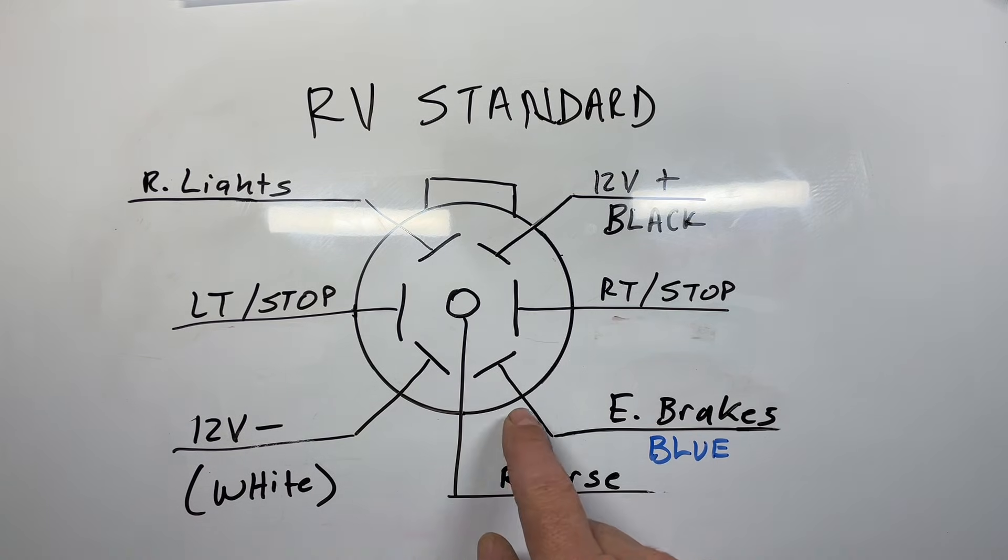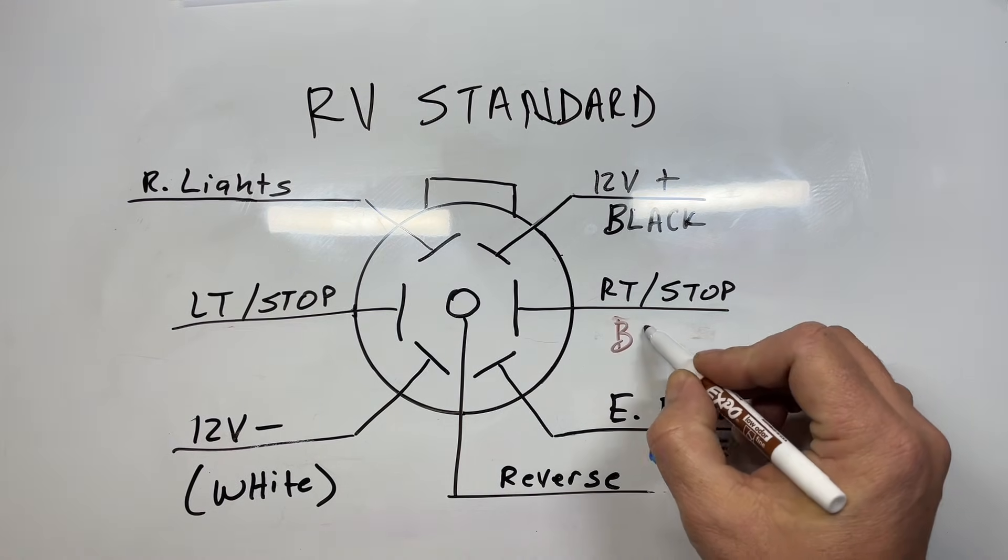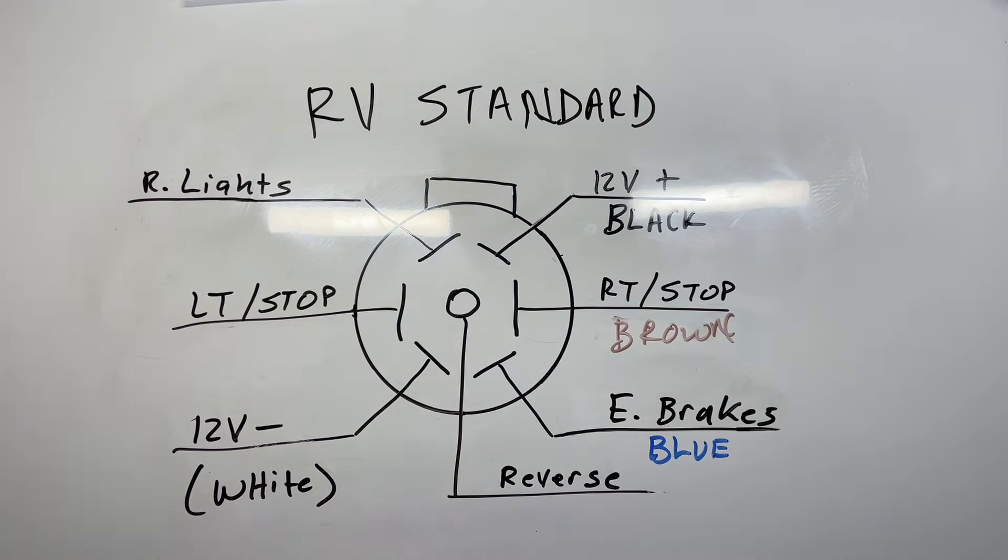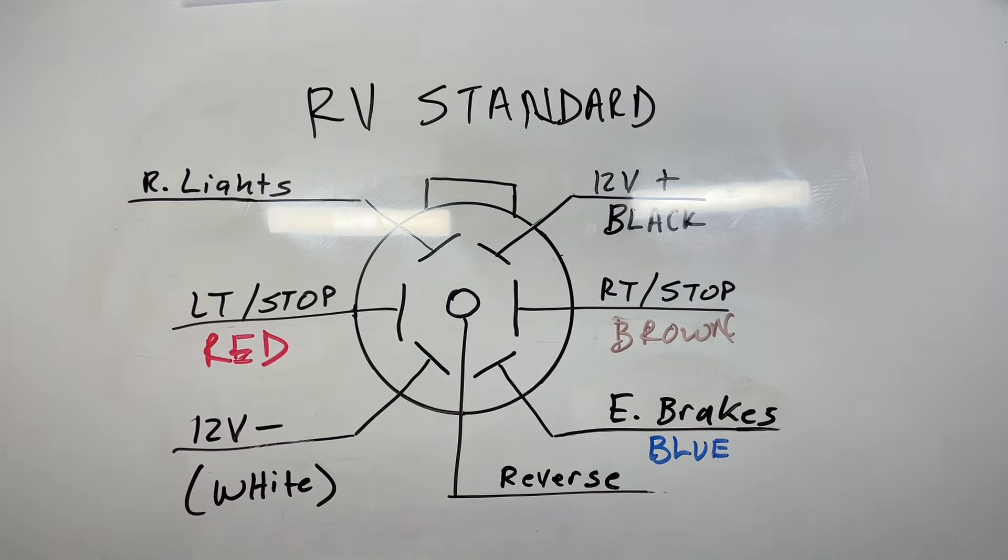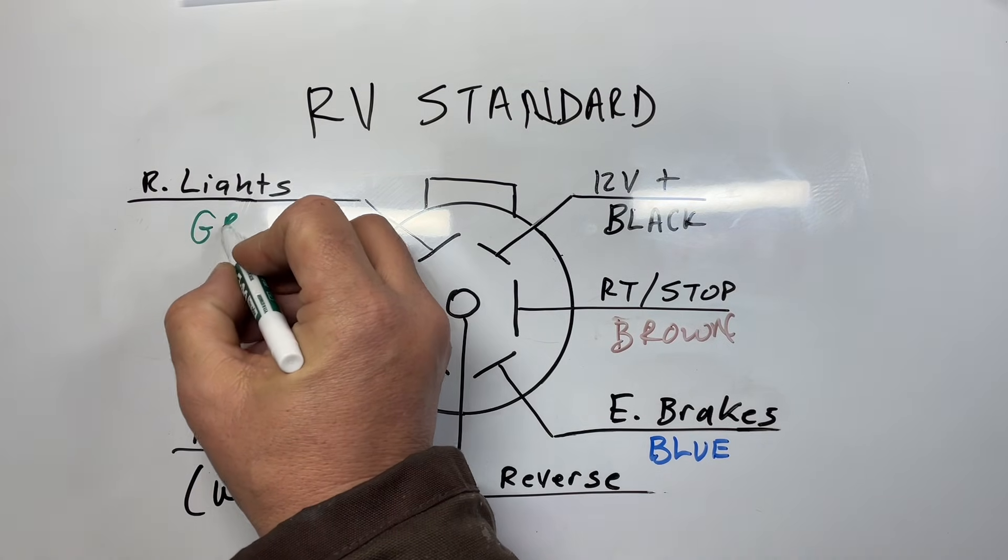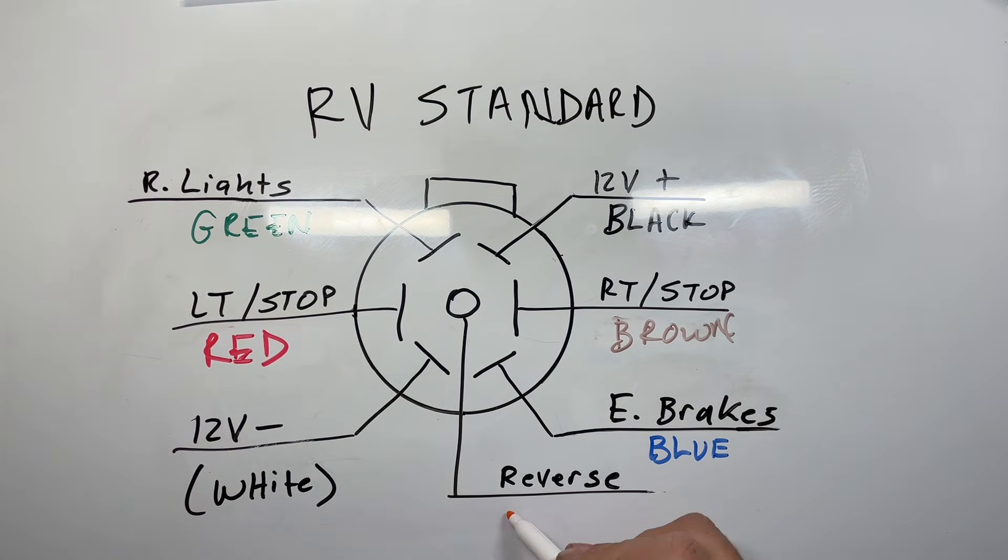And then the other one that stays true to the same color combination is going to be your electronic brakes on the bottom right, which is in blue. Where they're going to change is going to be in the lights themselves. We're going to have brown for our right turn stop. Our left turn is going to be in red. Then your running lights, those are going to be in green. And then finally, your reverse lights, which will be in yellow.